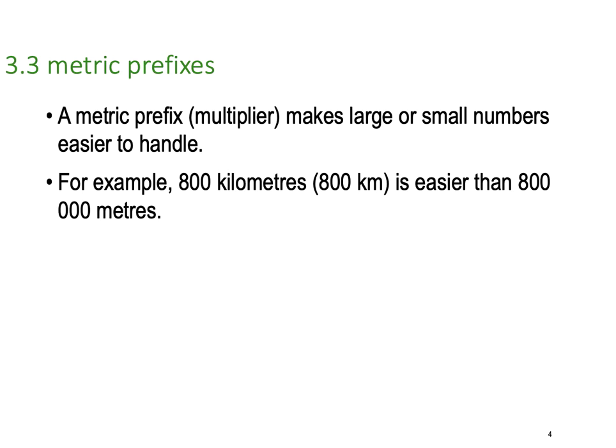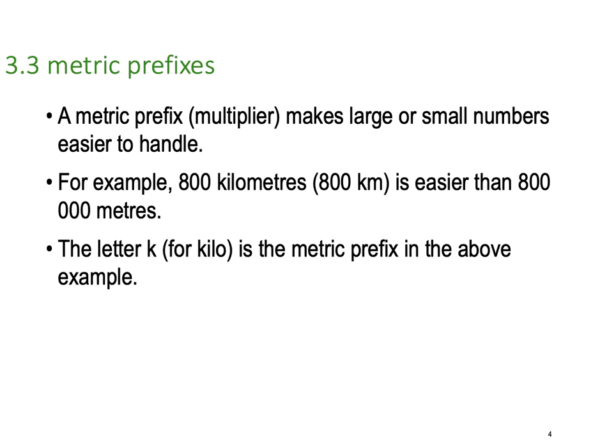So when we're working in electrical physics, we can be dealing with very minute numbers and some very large ones, and this is a helpful way to deal with those kinds of numbers. For example, 800 kilometers or 800 km. The letter K is for kilo, which is the metric prefix. Kilo means 1,000. So a kilometer is 1,000 meters, a kilogram is 1,000 grams.